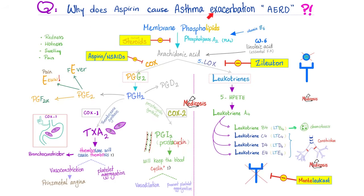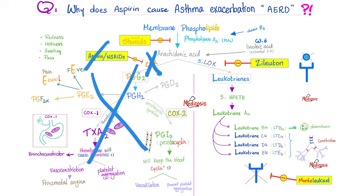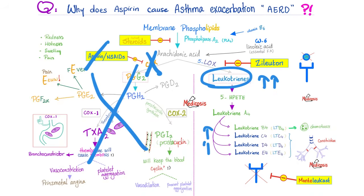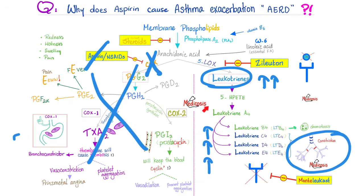Why does aspirin cause asthma exacerbation, otherwise known as aspirin-exacerbated respiratory disease? If you understand pharmacology, there will be no mystery. Aspirin inhibits cyclooxygenase. And when you inhibit cyclooxygenase, you're not going to make prostaglandins. Therefore, all of the arachidonic acid will have only one pathway left — it will be diverted to the leukotriene pathway, to the lipoxygenase pathway. Now you'll end up with lots and lots of leukotrienes, including leukotriene C4, leukotriene D4, and leukotriene E4. All of them tend to cause bronchoconstriction, which makes the life of an asthma patient hell. Medicine makes so much sense once you understand what you're talking about.